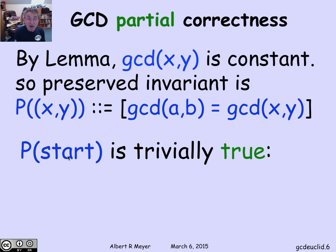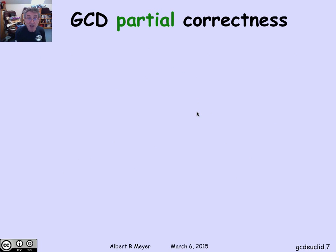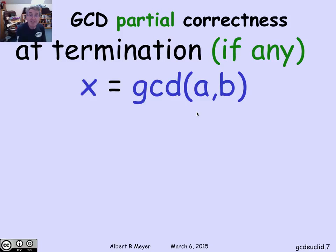Moreover, P of start is trivially true because at the start x and y are a equals b, so P of x and y is just saying that GCD of a and b is equal to GCD of a and b. So I've got that this property is true at the start and it's preserved by the transitions, so the invariance principle tells me that if the program stops, the GCD of x and y when it terminates is equal to the actual GCD that I want. And that enables us to prove partial correctness.